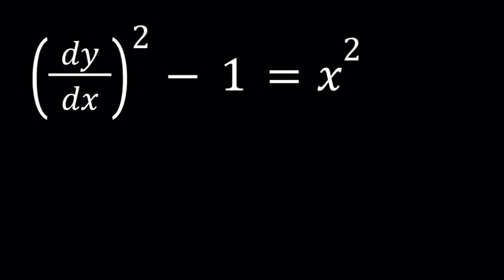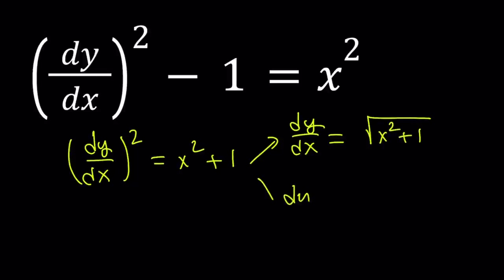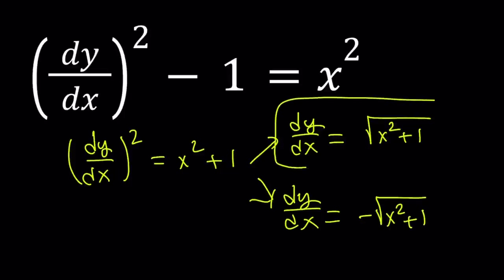So let's go ahead and add 1 to both sides first. At this point, we can go ahead and square root both sides, but that's going to give us two different results. So dy over dx is either the square root of x squared plus 1, or dy over dx can be written as the opposite of square root of x squared plus 1. We're going to solve the first one, and then just negate the result because that's fairly easy to do.